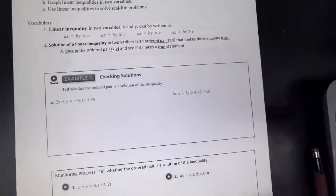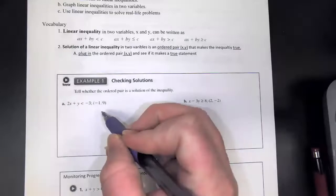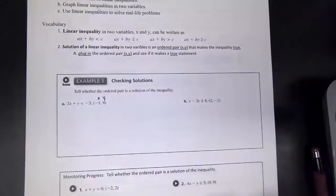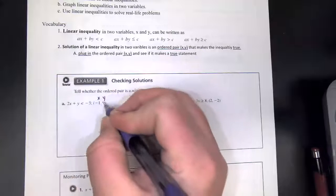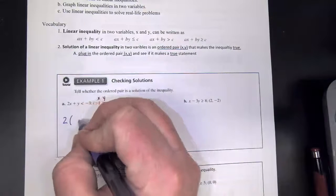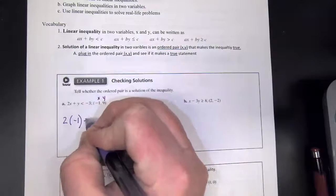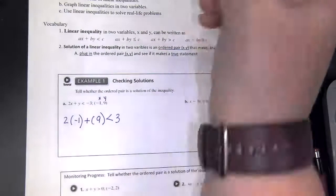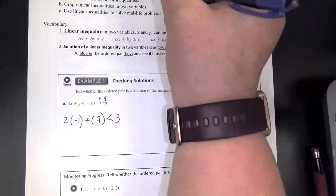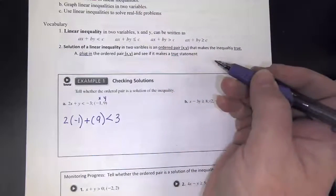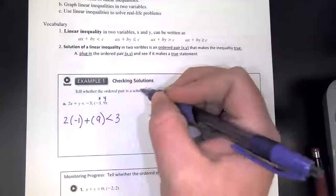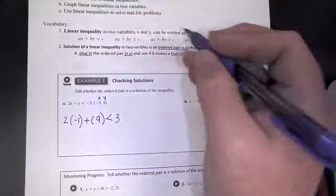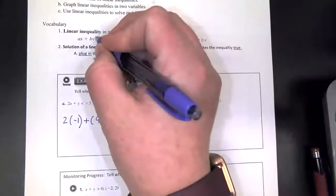Okay, so the first thing we want to do is checking for solutions. Okay, so we're going to, what you're going to do here is you have x and y, and you're going to plug x into x and y into y. So here's x plus 9. Oh man, inequalities. Whoa, inequalities. That means we have greater than, less than signs.